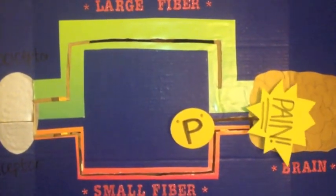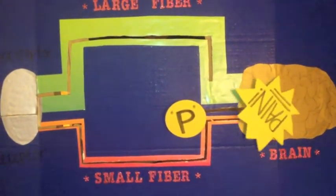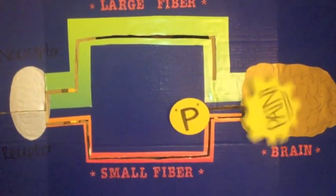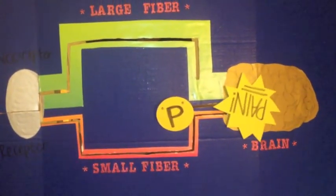This means the P neurons are free to connect with the brain, and the gate is now open. Once the message is sent out, it interacts with many neurons until it reaches the part of the brain that senses pain.